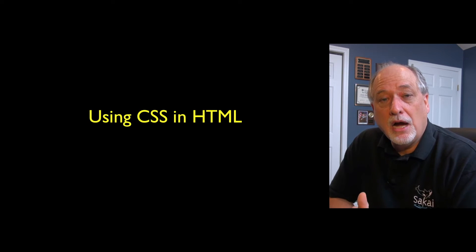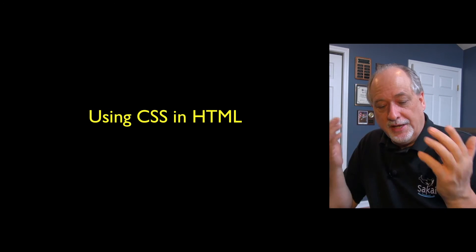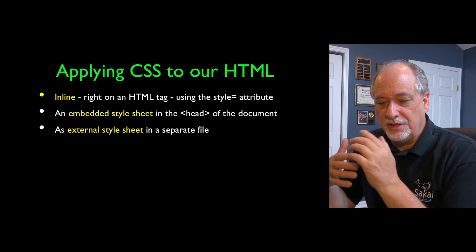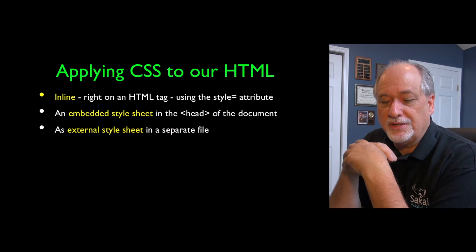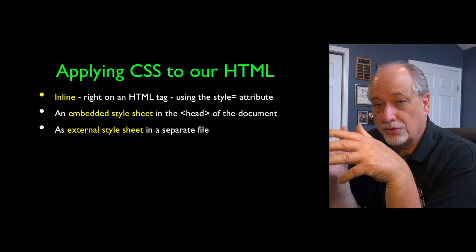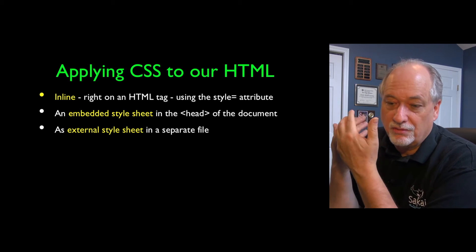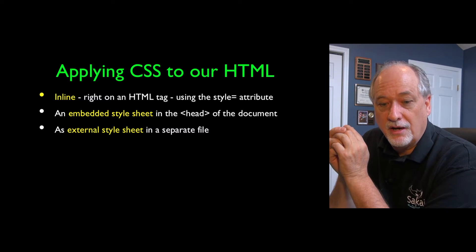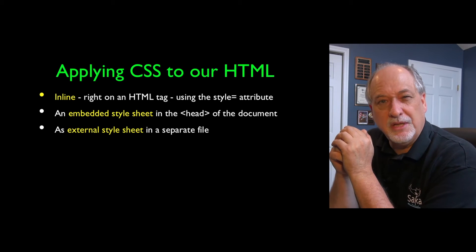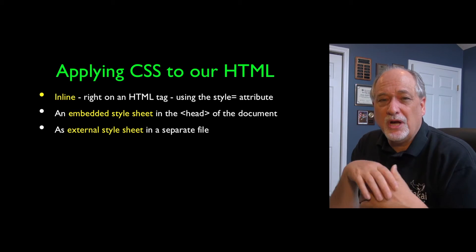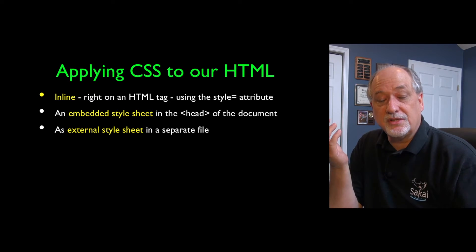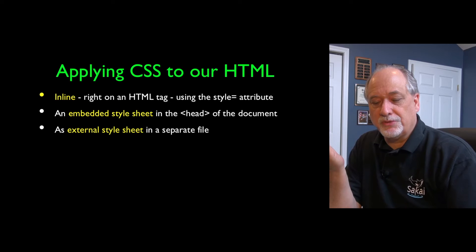Welcome back. Now we're going to talk about how you use CSS within HTML, how you take these CSS rules and apply them to the various parts of HTML. There are three basic ways to do this. One is using the style attribute on an HTML tag. Another is putting it in the head area of the HTML document. And the third, probably most common especially when styles get large, is an external style sheet — a separately loaded file with a separate request-response cycle.